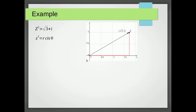To get the length of the line we just use Pythagoras. This line is √3 and this one is 1. So √3 squared is 3, 1 squared is 1, add those together to get 4, square root it, and we get R equals 2.